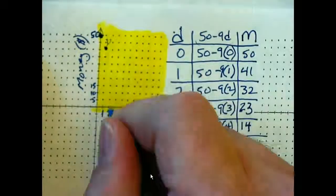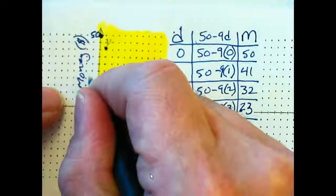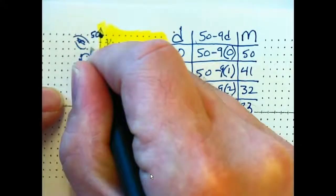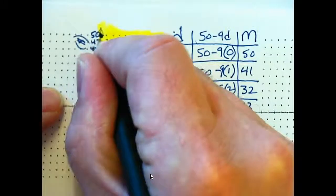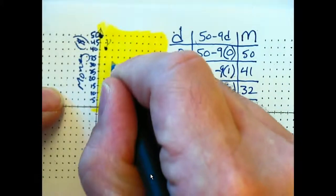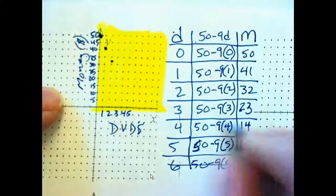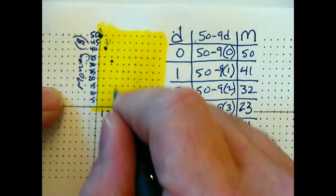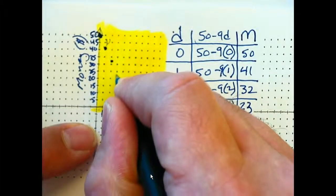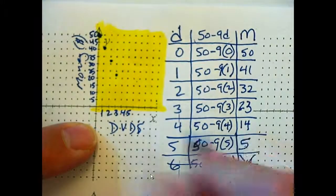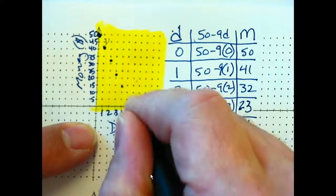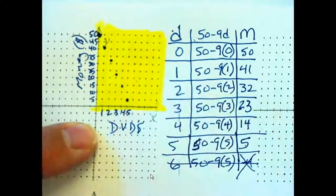And then 1, 41, that puts me right about there. And then 2, 32 puts me right. So it might want to label these, because it's kind of hard to figure out where I'm at. All right. So 32, right about there. 3, 23, right about there. 4, 14, there. 5, 5.